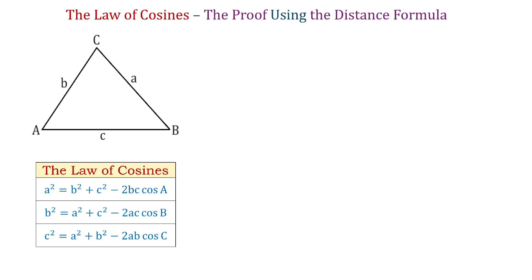In this video we will take one of these formulas, for example the first one, and we will prove it using the distance formula. We will show that if we have sides B and C and angle A, then this expression equals A squared.